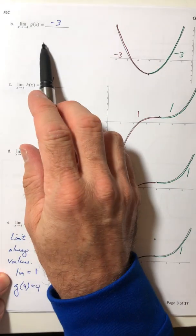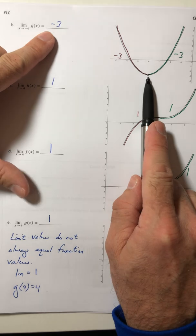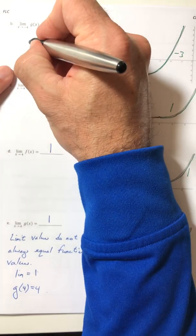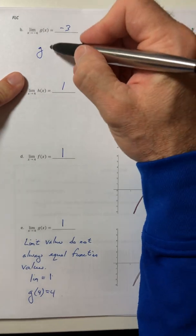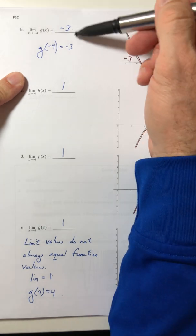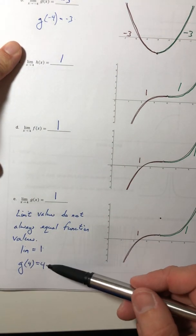Sometimes they do, like in these previous examples, the limit was negative three. Well, that was the Y value when X is negative four. So in this case, G of negative four does actually equal negative three. So sometimes they can be the same, but they don't always have to be.